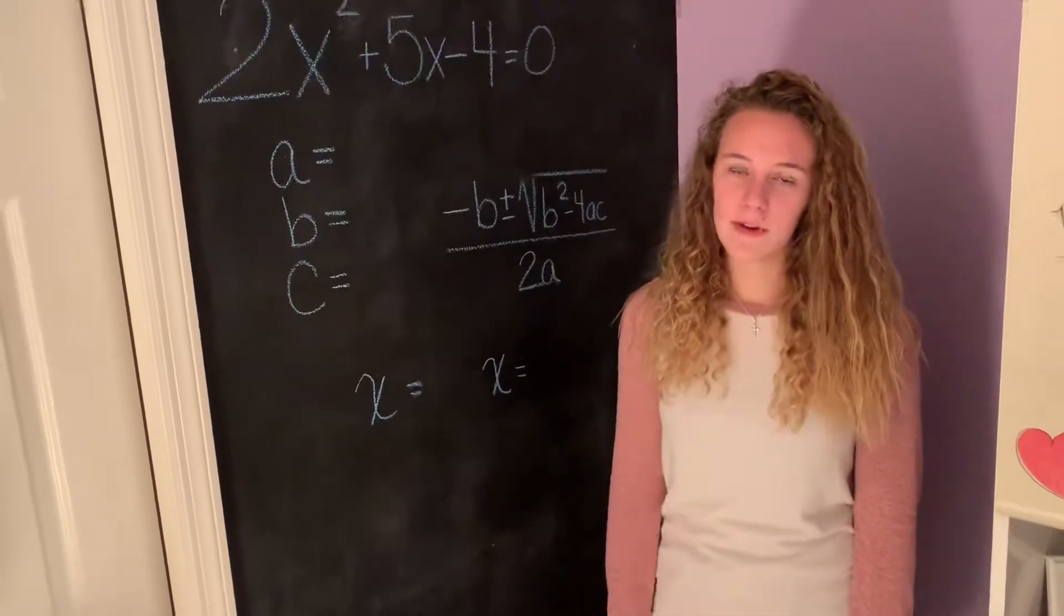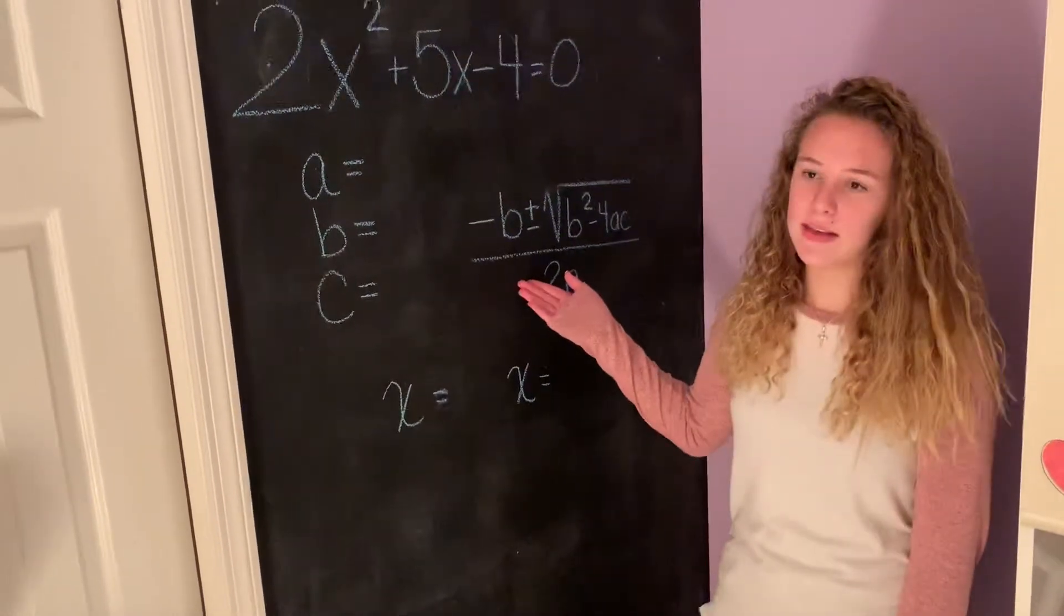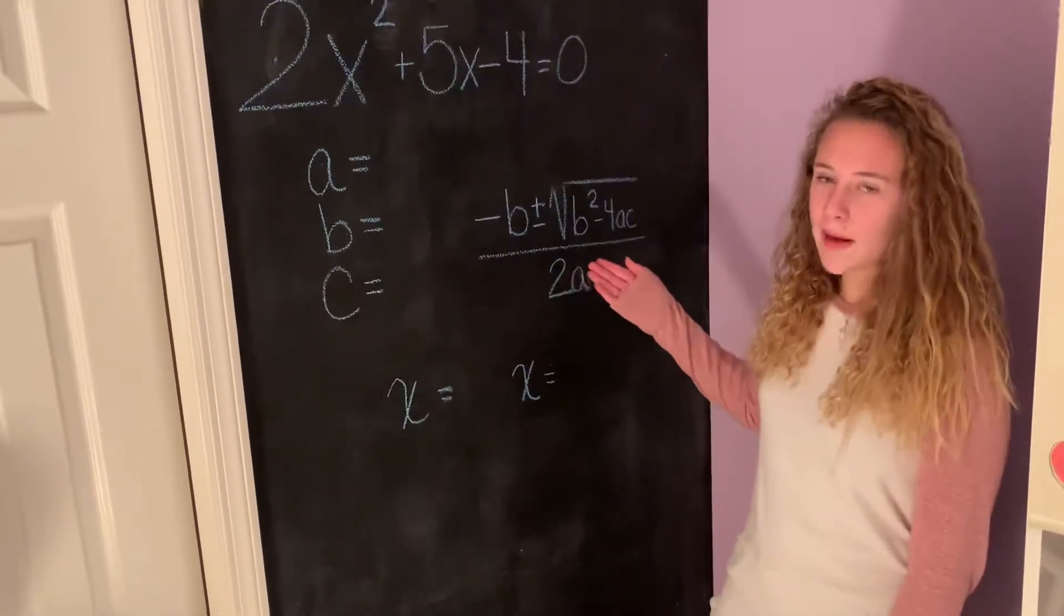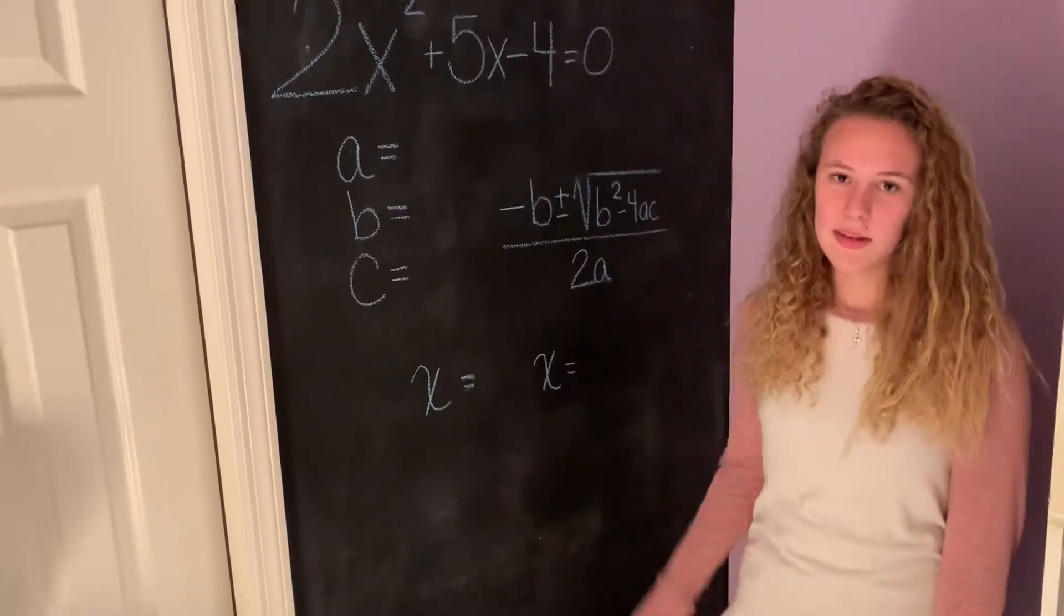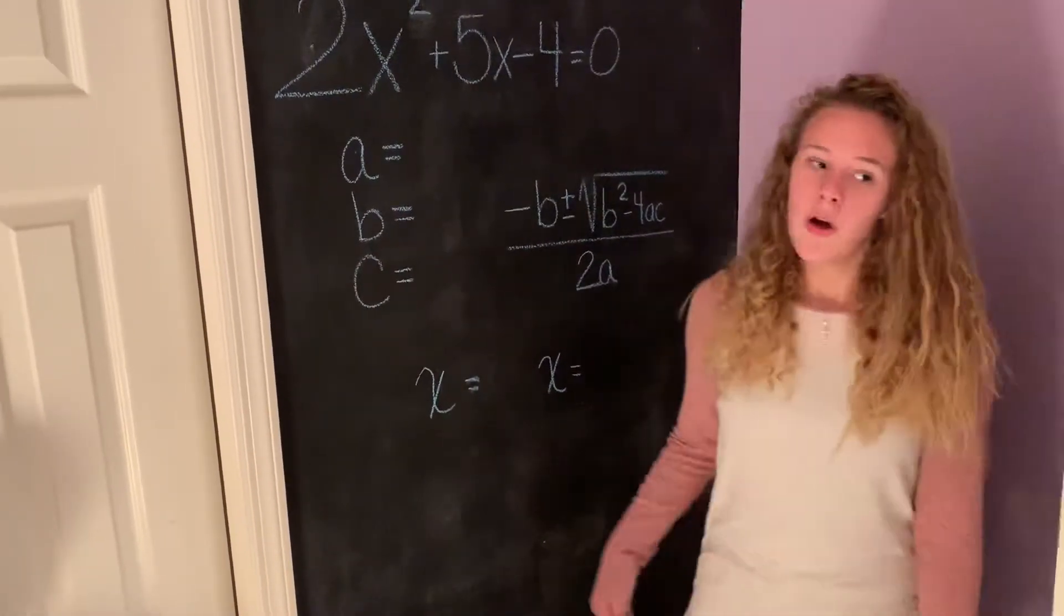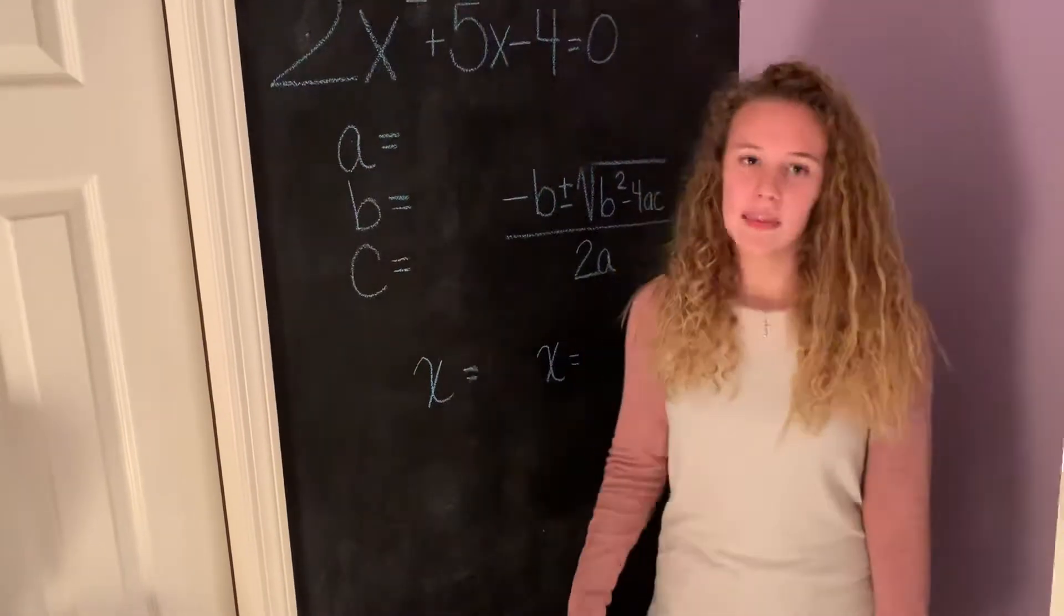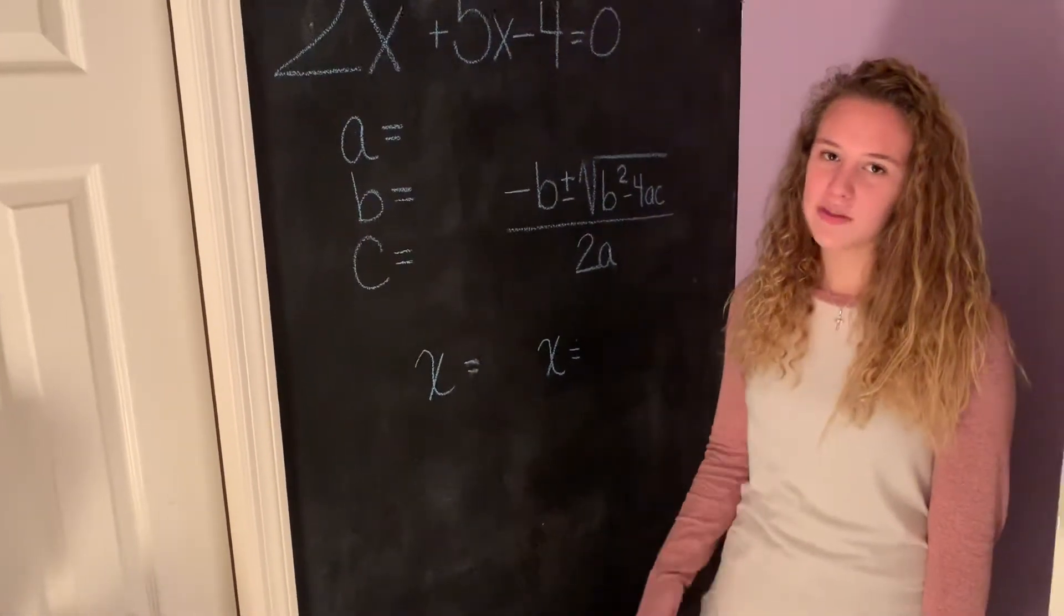This is how I can solve for X. I'll put negative B plus or minus square root of B squared minus 4AC. Take it all over 2A. Hope the answer isn't complex. I really wish that I could factor this.